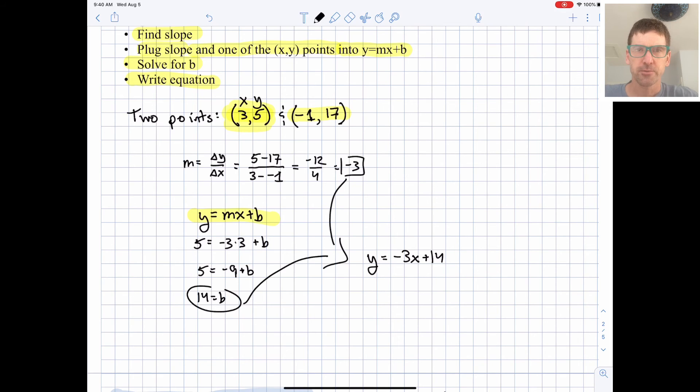In terms of doing a check here, I think it is sometimes helpful to draw just a super rough sketch of things. We have a very relatively high y intercept with a steep downward slope, negative 3x plus 14. Does it make sense for it to be over 3 and up 5? Sure, roughly, yeah, that seems to make sense.